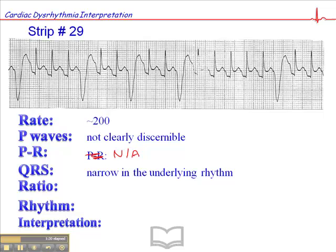The QRS is narrow in the underlying rhythm, but we do have these wide complex beats that happen earlier than expected without associated P-waves, and so those are premature ventricular complexes. The ratio is not applicable, and the rhythm is irregular only because we have this regular tachycardic rhythm disrupted by these premature ventricular complexes.